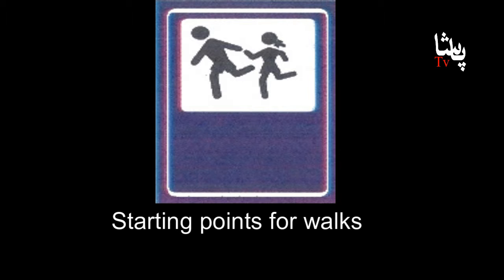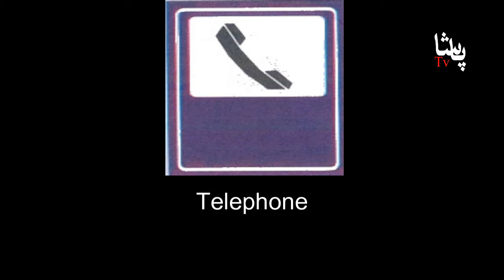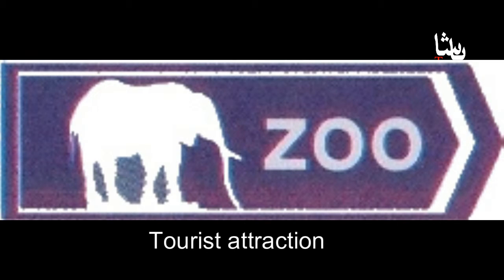This signboard will be entered. From this signboard, you can see it works, because on motorways there are many places where mobile systems are not coming. In this signboard, there is a zoo.